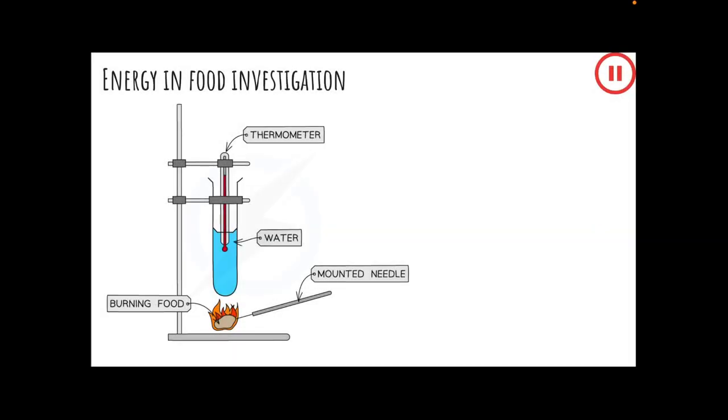You can compare the amount of energy stored in different foods by burning them. The diagram shows the apparatus that we used in this investigation. The energy released by the burning food heats the water in the boiling tube. The higher the temperature of the water, the more energy the food released when it was burnt. In this investigation, you should find the mass of the piece of food, then carefully put the food onto the pin of the mounted needle. You should use the same volume of water and record the start and end temperature.